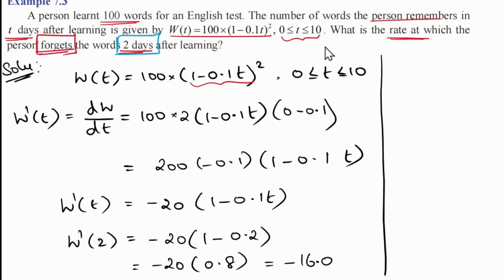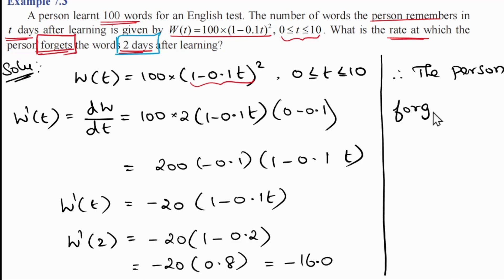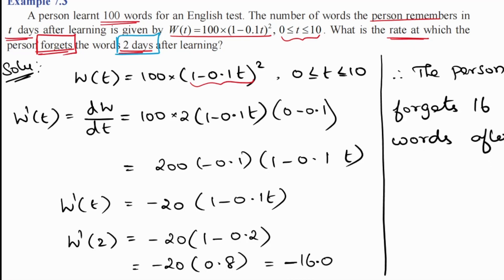Therefore, the person forgets 16 words per day 2 days after learning. The person forgets 16 words after 2 days. This is our required answer. Thank you, students.